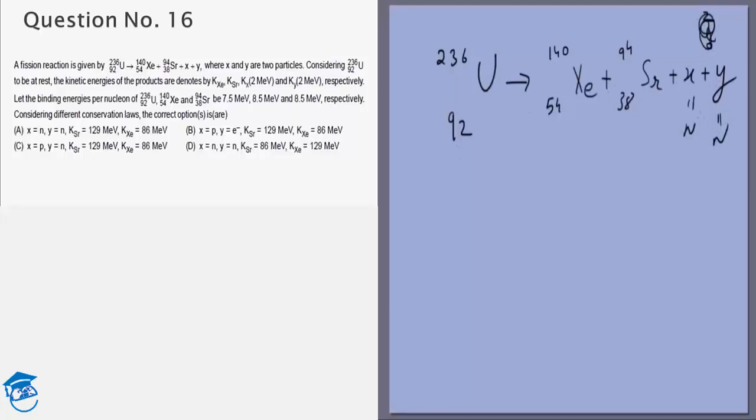Now for finding the kinetic energy, we are given the binding energy per nucleon. The binding energy per nucleon is the energy required to break up the atom. So if an atom is breaking up, it is absorbing that much amount of energy, and if an atom is forming, it is releasing that amount of energy.